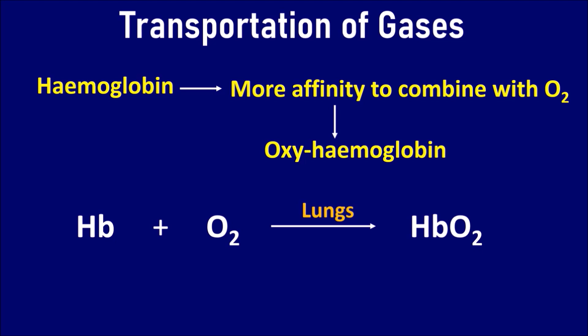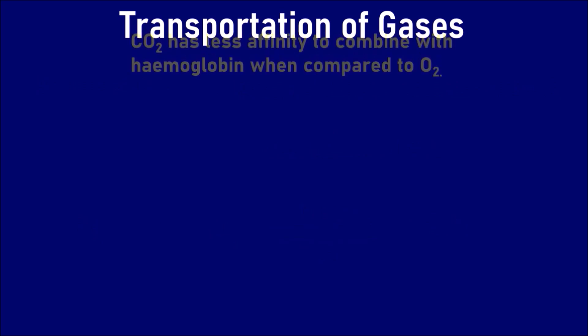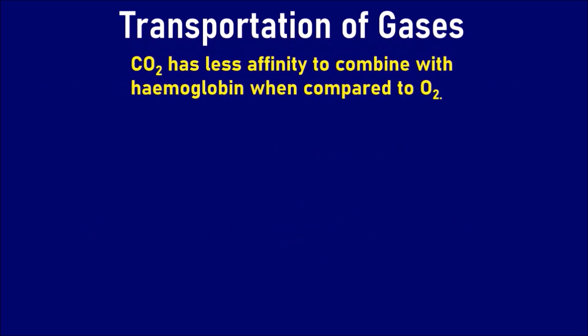But at tissues, it is a reversible reaction, as it dissociates and releases oxygen into the cells. Carbon dioxide has less affinity to combine with hemoglobin when compared to oxygen. Hence, carbon dioxide is transported in three methods.